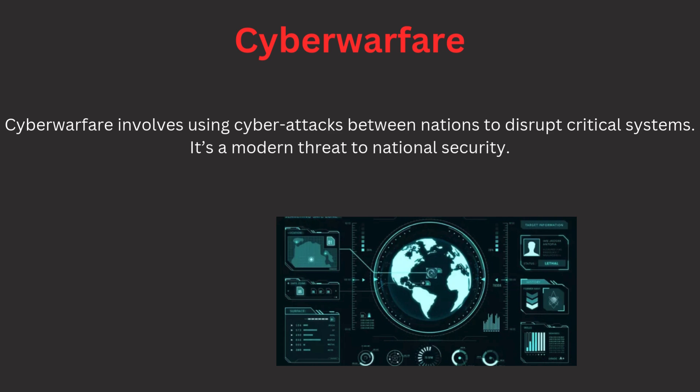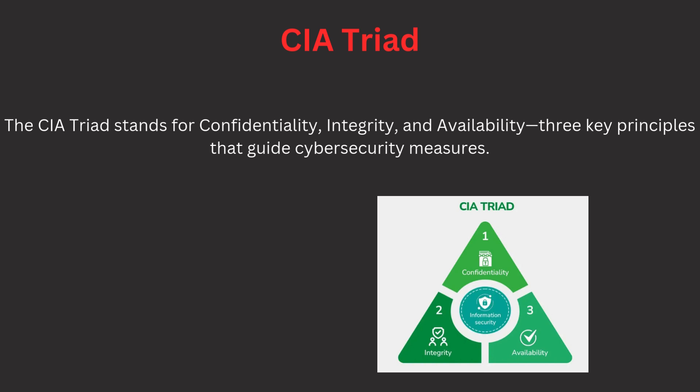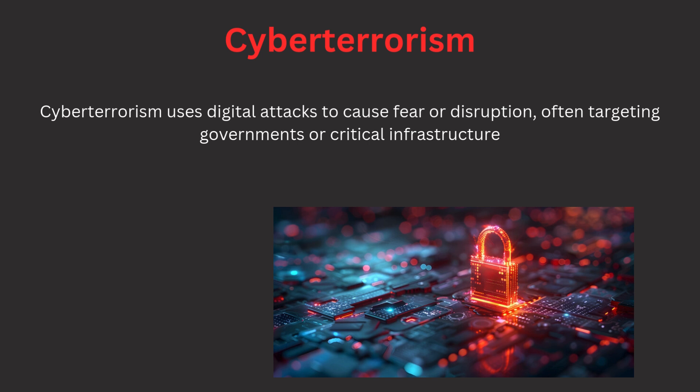The CIA triad is an important concept in cybersecurity — it is a model used to guide cybersecurity practices. It stands for Confidentiality, Integrity, and Availability. Confidentiality means keeping information private so only authorized people can access it. Integrity refers to ensuring that data remains accurate and unaltered. Availability means making sure that systems and data are accessible to those who need them, when they need them. Together, these three principles form the foundation of any good cybersecurity strategy.